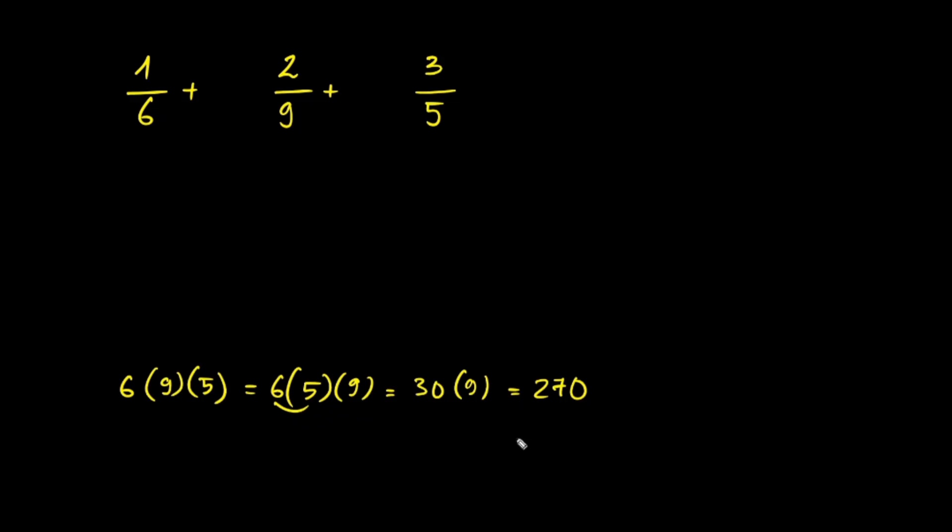The first fraction, I'm going to multiply it by the denominators of the other two fractions. 9 times 5 is 45. So I'm going to multiply by 45 over 45.